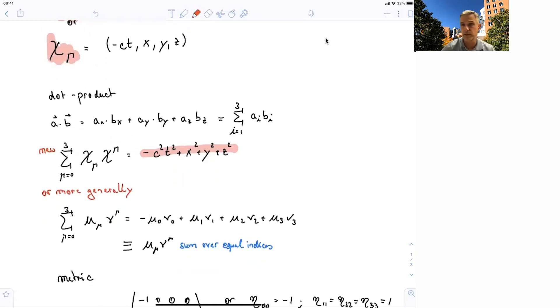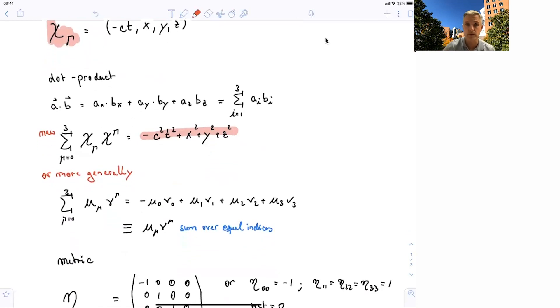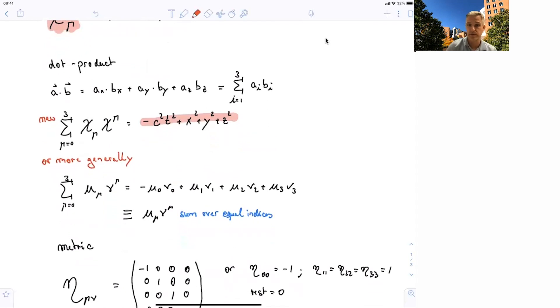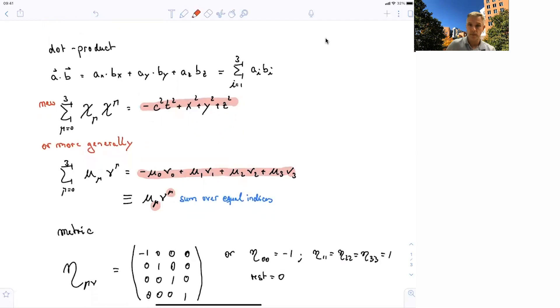More generally, this is for two of the same vectors. More generally, for two different vectors, we can write this in this way here. Or in short, you can define a new notation in which you basically sum over all indices which are equal. So here we have a μ upper and lower indices together. So you sum over this case here where there's the same index μ for both vectors, and one is lower and one is upper.